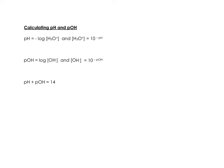pOH is a similar calculation. It's the negative log of the hydroxide ion concentration. And then the hydroxide ion concentration is 10 to the negative pOH.